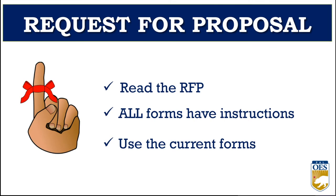Here are a few helpful reminders. First, read the entire request for proposal to understand what is required for the program. Second, all forms have instructions — if you have a question about a form, look at the instructions first and then email your program specialist for help. Third, use current forms. CalOES updates forms often, and if you are using a form saved on your desktop, it may be outdated and you'll be asked to redo it, which may delay processing of your award if selected.